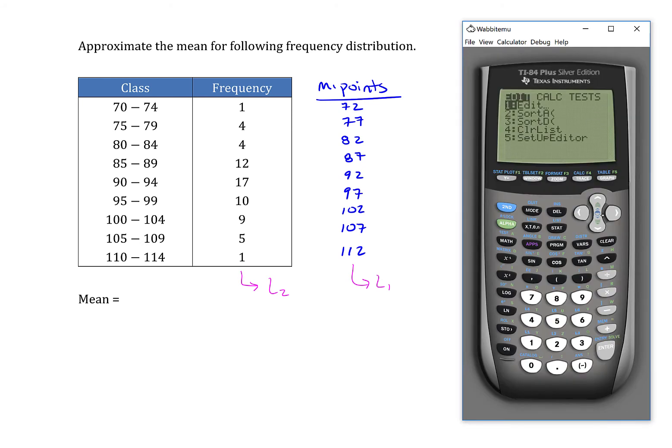So I'll hit stat and hit enter to go into my list editor. Since I already have some items in there, I'm going to clear those out and start entering these midpoints into L1 and then the frequencies into L2.